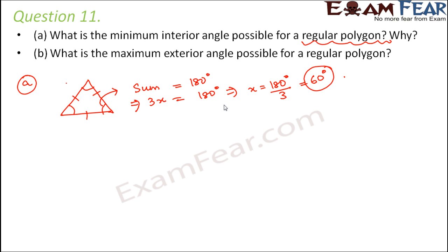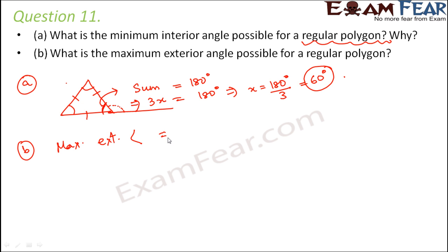Now, what is the maximum exterior angle possible for a regular polygon? Once we know the minimum interior angle is 60 degrees, when the interior angle is at its minimum, the exterior angle will be at its maximum. As the value of the interior angle increases, the value of the exterior angle will start decreasing — the interior angle's value increases at the cost of the exterior angle. Therefore, the point where the interior angle is minimum, the exterior angle will be maximum. So the maximum exterior angle equals 180 degrees minus the minimum interior angle of 60 degrees.